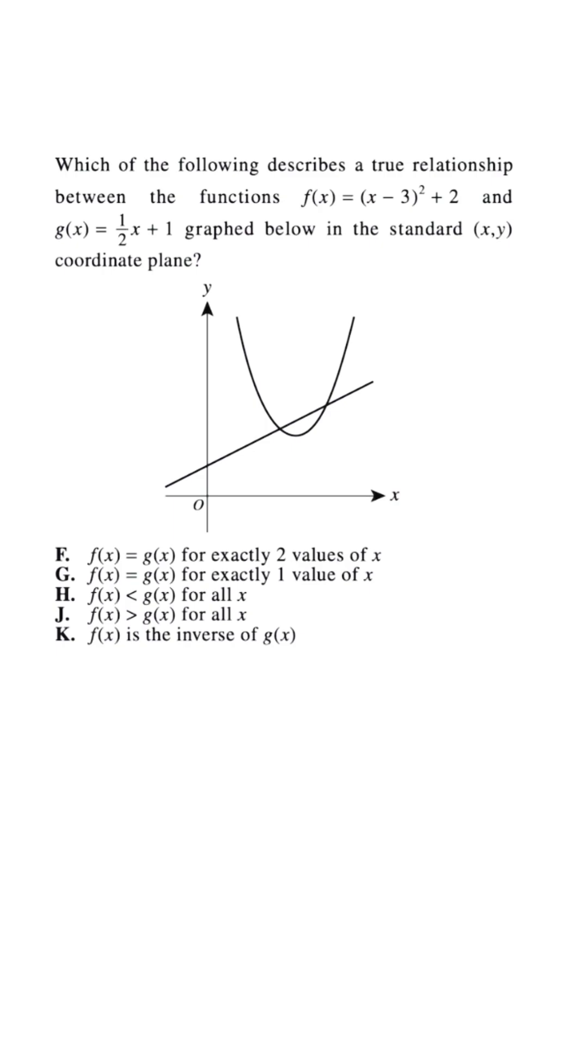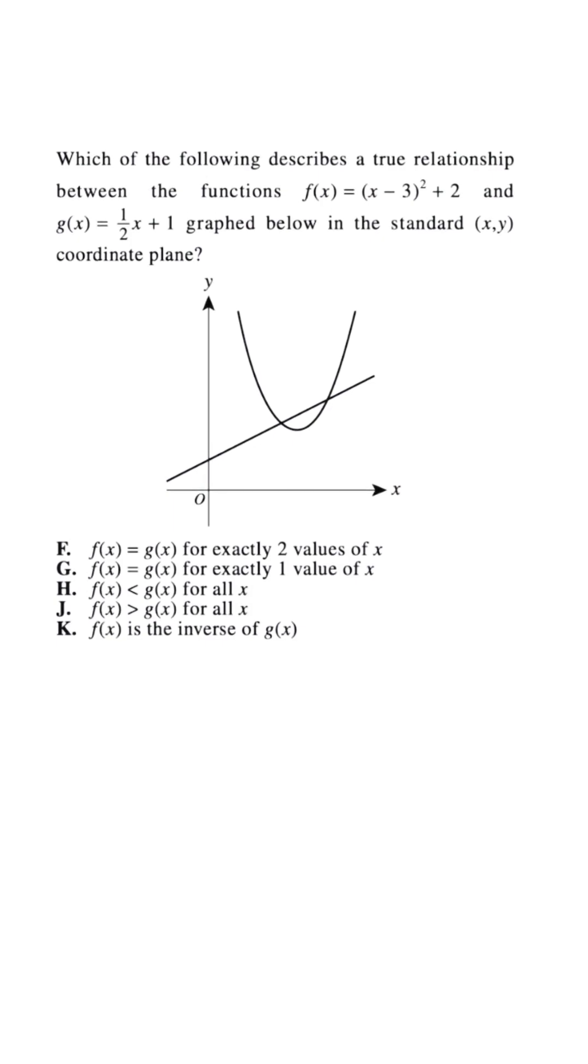We could eliminate answer choice K because the inverse of a quadratic equation will probably be another quadratic equation with some type of transformation or shift. So this is wrong.